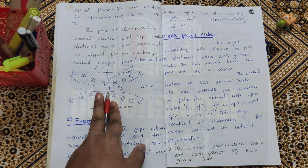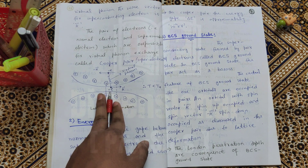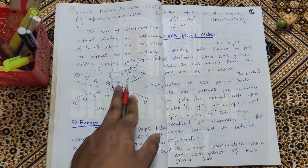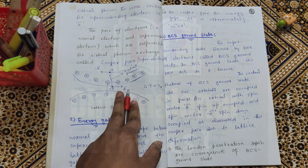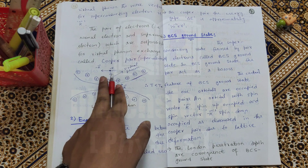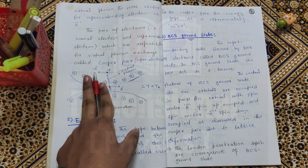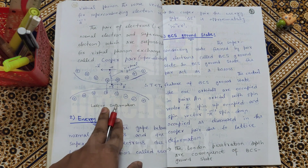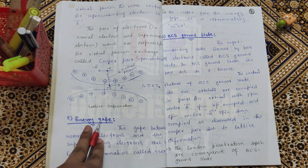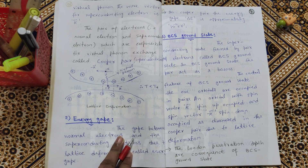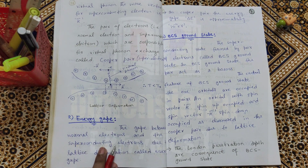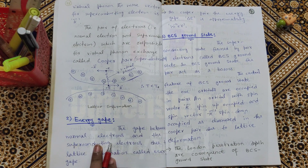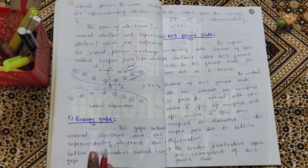This is the lattice deformation diagram for the superconductor case. In this virtual phonon phenomenon, the electron has wave vector k and the other electron has wave vector minus k, in the opposite direction. Next postulate is the energy gap. The gap between normal electrons and the superconducting electrons due to lattice deformation is called the energy gap.